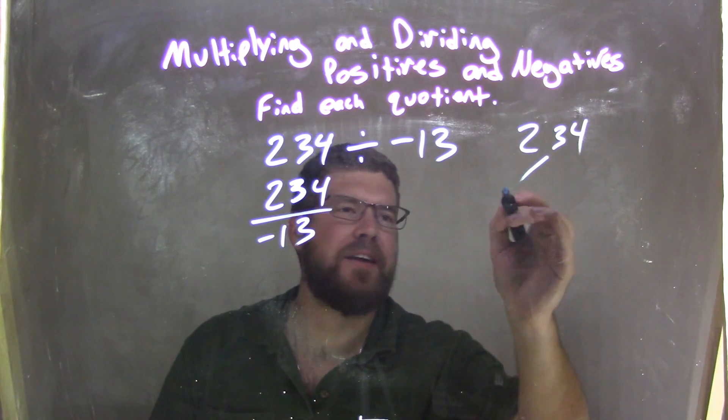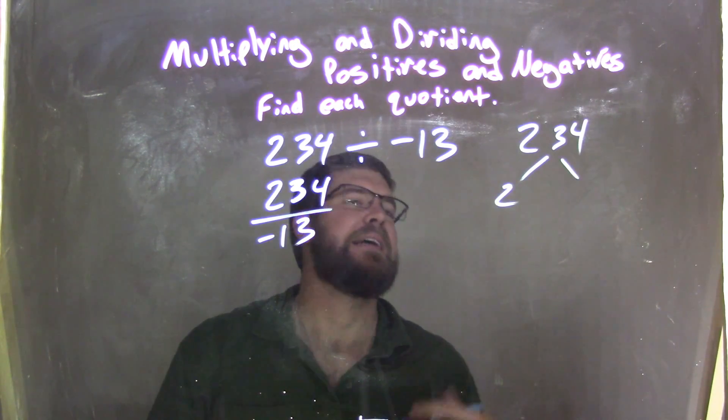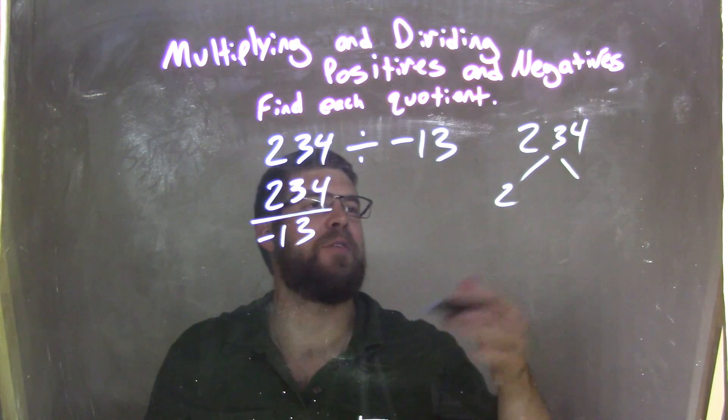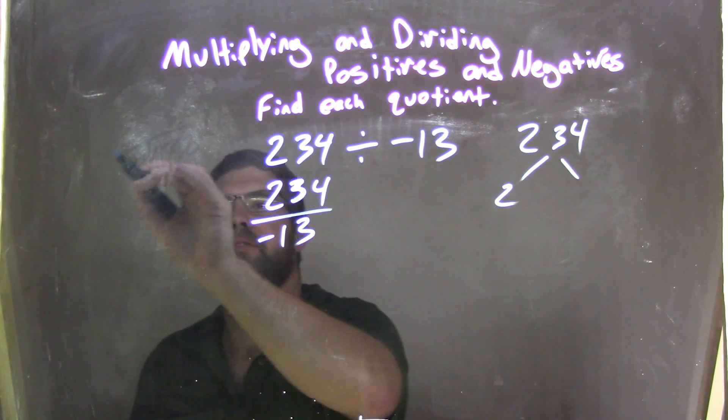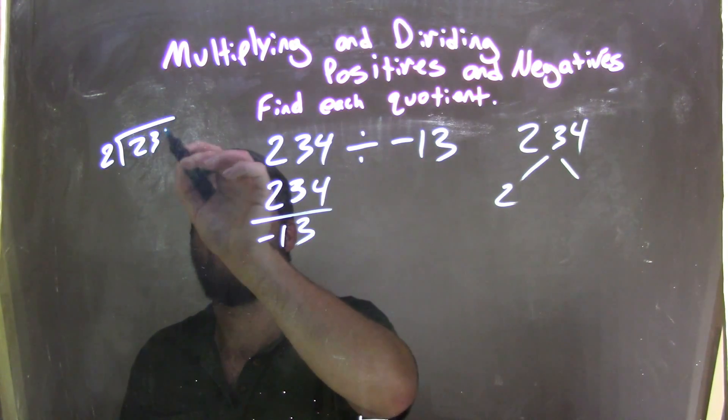Quickly, I know 2 goes into it because it's an even number, and so 2 goes into 234, so let's go figure that out. 2 goes into 234, I'm going to cut it in half here.